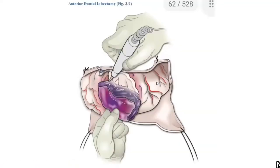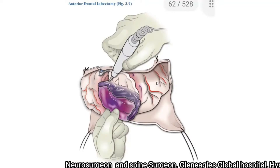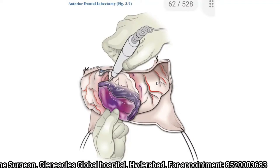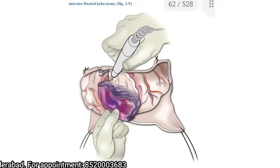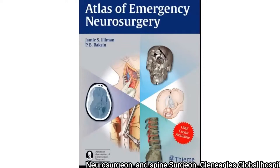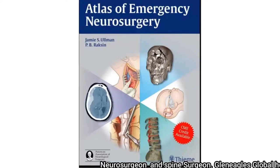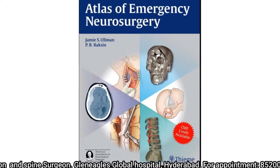Once hemostasis is achieved, the next steps are similar to the previous session: decide whether to perform a primary duroplasty, expansive duroplasty, or tack-up sutures secured with Gelfoam. Decide whether to replace the bone flap or preserve it elsewhere. Achieve hemostasis, place a closed suction drain, and close the skin in layers. All explanations are from the Atlas of Emergency Neurosurgery by Dr. Jamie Ullman and Dr. Raksin; refer to this book for any further doubts.